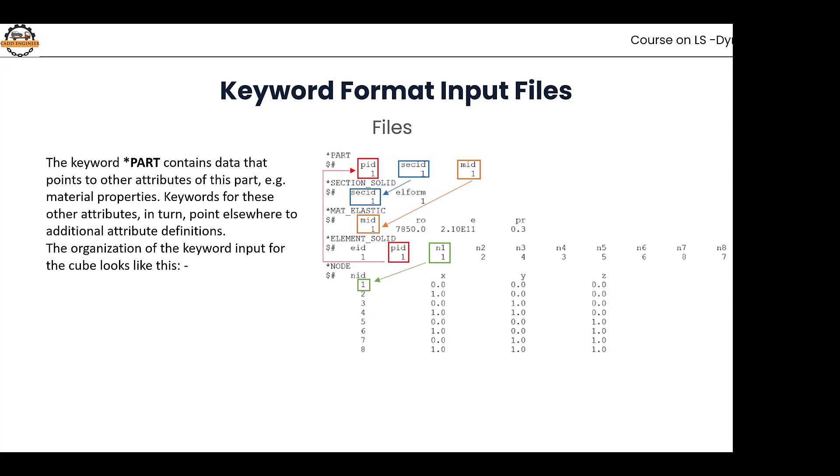Before beginning, we should know that when we open a part, the part keyword contains data that points to other attributes like material property. When I design a part, I require PID (part ID), section ID, and MID (material ID). First, we always make the material in the software, then define that material. If I created material one, my material ID will be one.